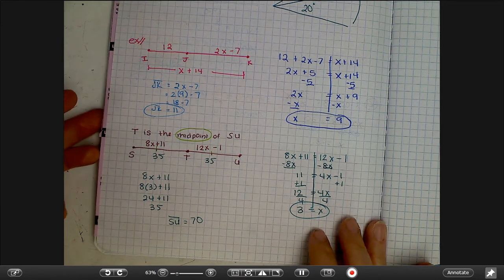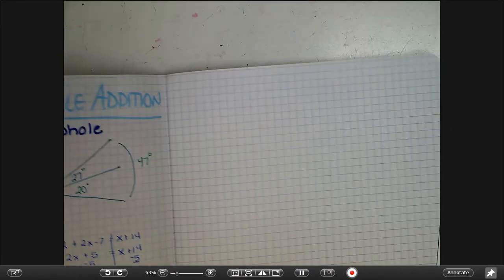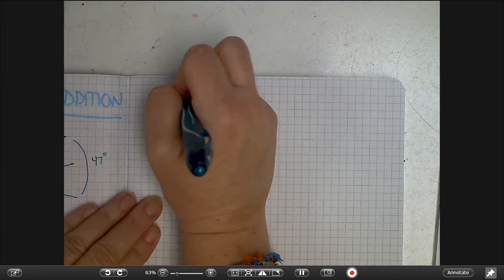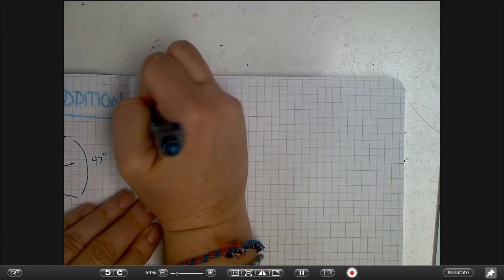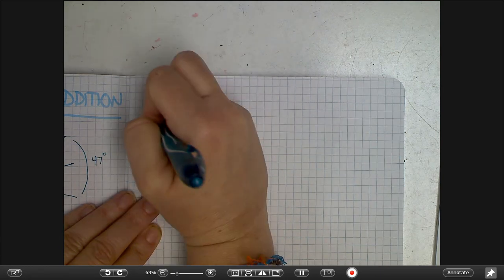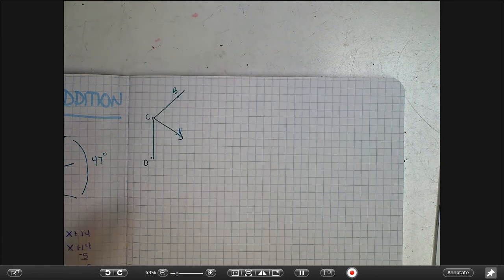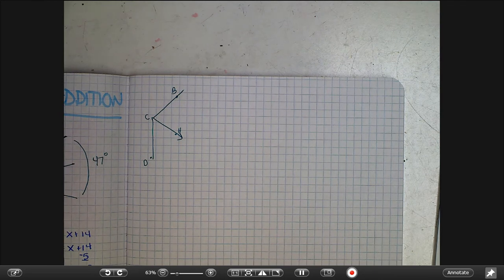And let's do two with angles and then we'll be all set. All right, so let's say you have angle BCD cut by CH.